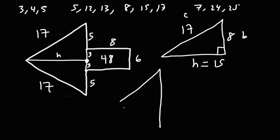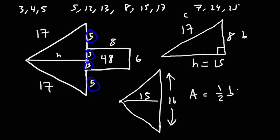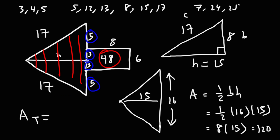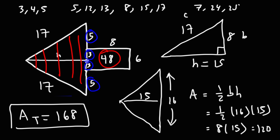Now let's finish this problem by focusing on the large triangle. The height of this triangle is 15. The length of the base is 5 plus 5 plus 3 plus 3, for a total of 16. The area is one half base times height: one half times 16 is 8, and 8 times 15 is 120 — since 8 times 10 is 80 and 8 times 5 is 40, giving 80 plus 40 equals 120. So this portion is 120 square units. Adding 120 plus 48 gives us a total area of 168 square units for that composite figure.